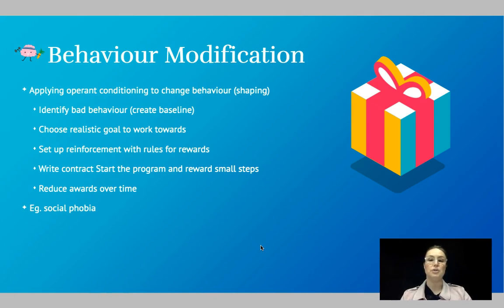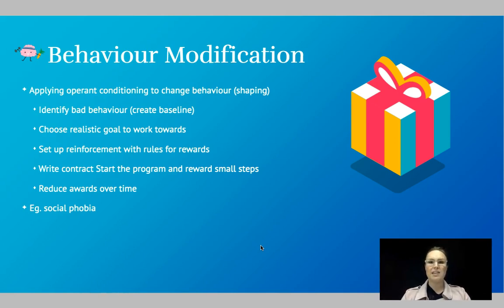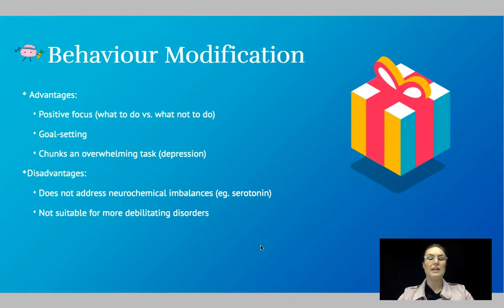Behavior modification was discussed in our learning topic. It involves applying operant conditioning to behavior and trying to shape that behavior to be more positive, using reinforcement. The steps are: identify the bad behavior, create your baseline, choose a realistic goal to work towards — for someone with social phobia this might be being able to go to a party and feel comfortable — then set up reinforcements with rules for rewards, write a contract, start the program, and reward the small steps along the way.